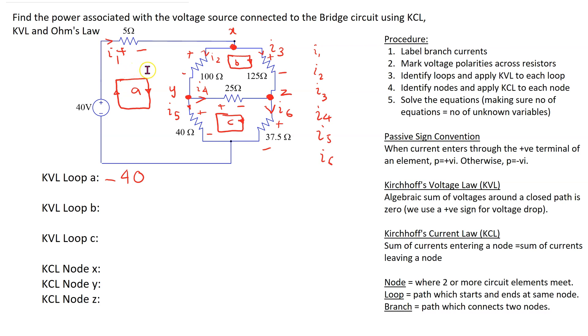Next we have a voltage drop going from plus to minus, and using Ohm's law, the value of this voltage drop is 5 I1. Next is another voltage drop going from plus to minus, so this is plus 100 I2. Then this is the last voltage drop going from plus to minus, so this is 40 I5 equals 0.